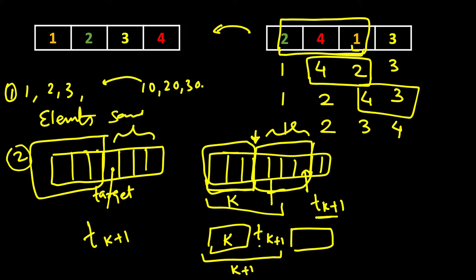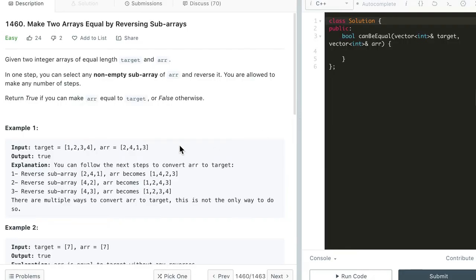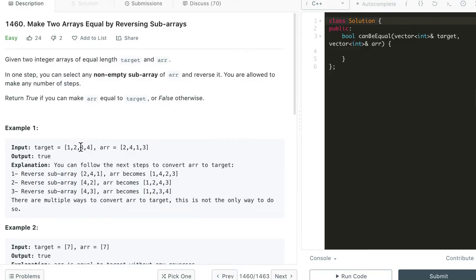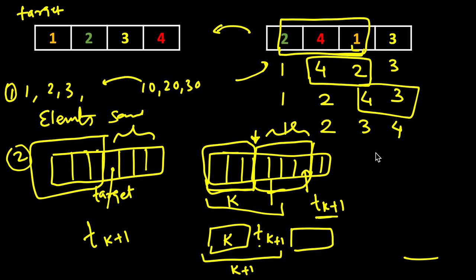Let's write the code in C++, Java, and Python. We simply need to check that all the elements are the same — the arrays are already of equal length. One approach is sorting: sort both arrays and compare element-wise. If they have the same elements, after sorting each position will match. That takes O(n log n) time. A second approach is to iterate through target and keep a count of elements in a map.